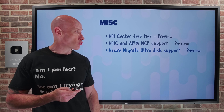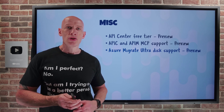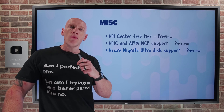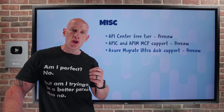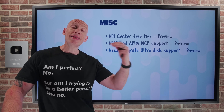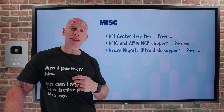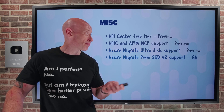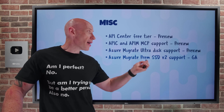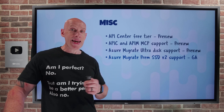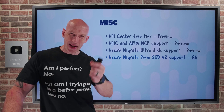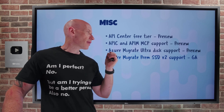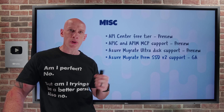Azure Migrate now has Ultra Disk support in preview. When assessing your workload, Azure Migrate will now consider Ultra Disk capabilities and potentially suggest it as the target for migrating data disks — offering the highest performance and lowest latency. And on the same topic, Premium SSD V2 support is now GA in Azure Migrate. It has slightly higher latency and lower top-end IOPS and throughput than Ultra, but Azure Migrate will now suggest it if it's the best fit. Both are great for high-performance databases like SAP HANA.